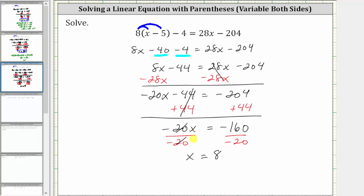The solution to the equation is x equals eight, which means eight will satisfy the equation. And let's go ahead and check this by substituting eight for x back into the original equation. Performing the substitution, we have eight times the quantity eight minus five, and then minus four, which must equal 28 times eight minus 204. Let's evaluate both expressions using the calculator.